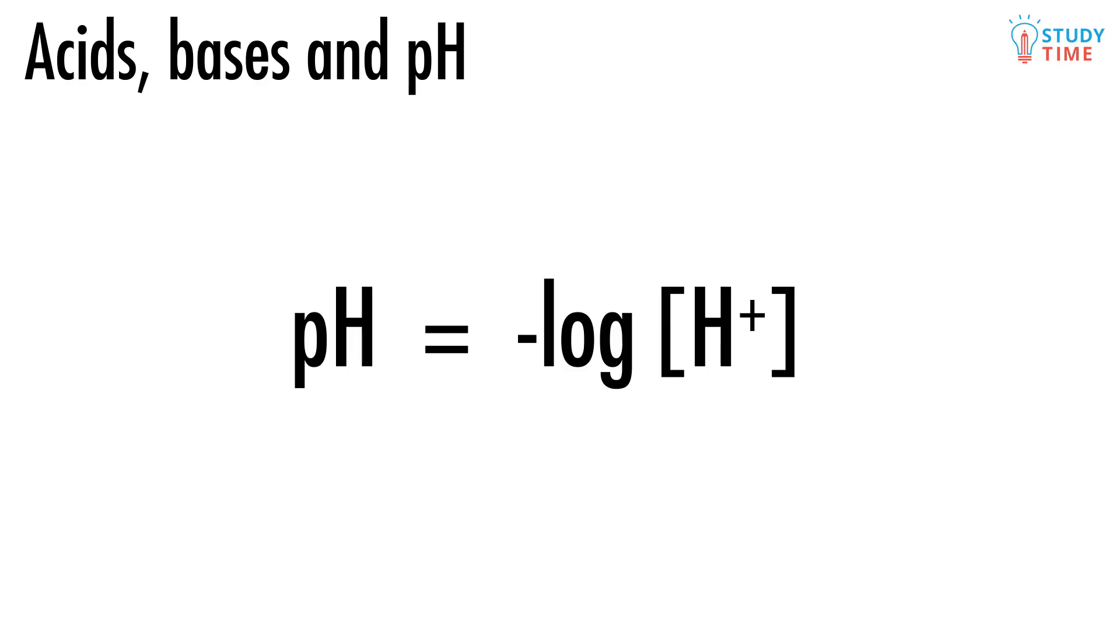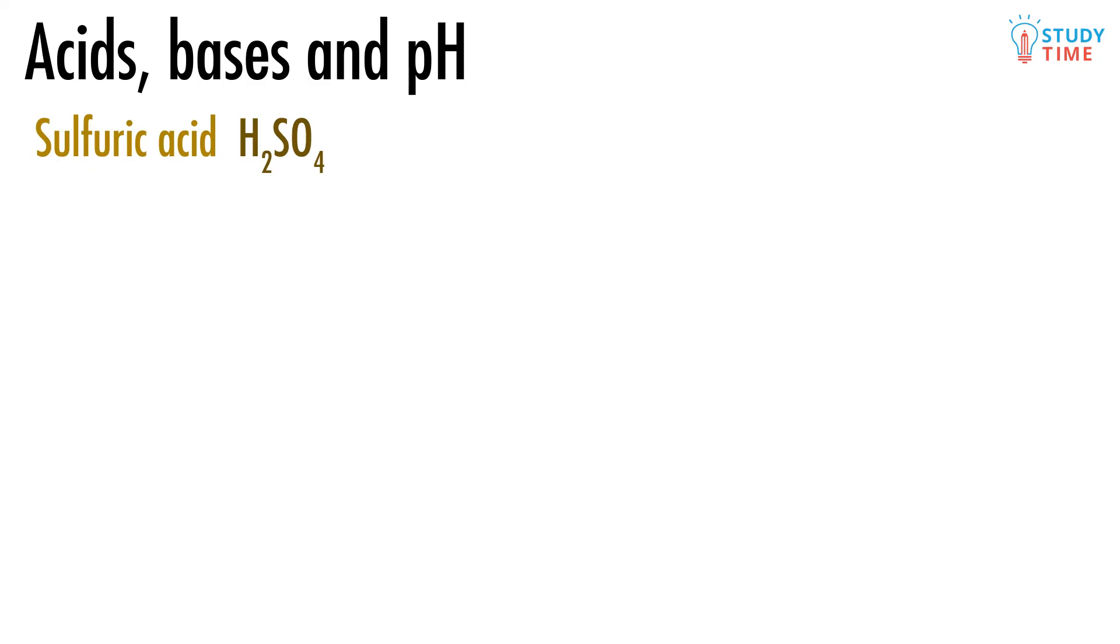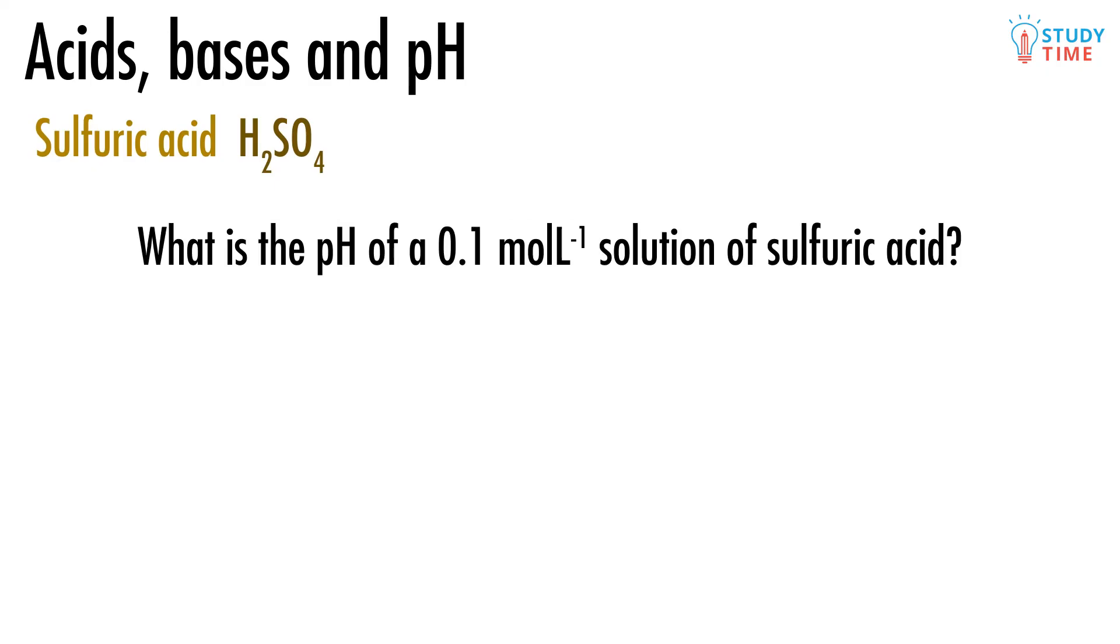Let's look at how we can use this equation to calculate the pH of a strong acid, like sulfuric acid, H2SO4. What is the pH of a 0.1 mole per liter solution of sulfuric acid? Since sulfuric acid is a strong acid and therefore fully dissociates, and there is a 1 to 1 mole ratio between sulfuric acid and the H3O+ produced, we can simply do the calculation. pH equals the negative log of [H3O+] equals the negative log of 0.1 equals 1. And that sounds about right.